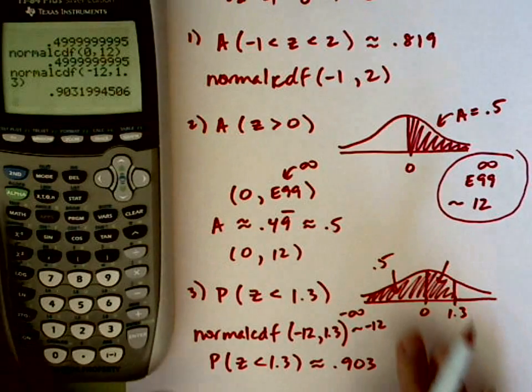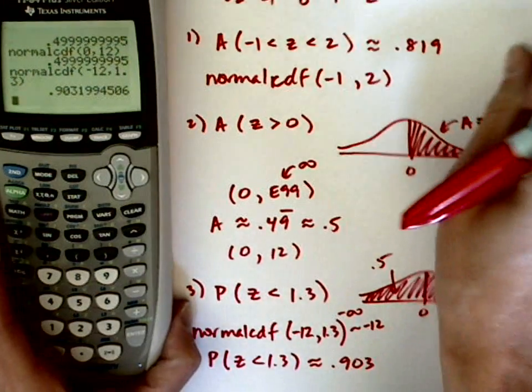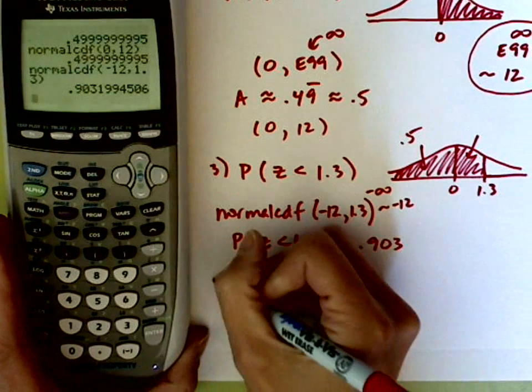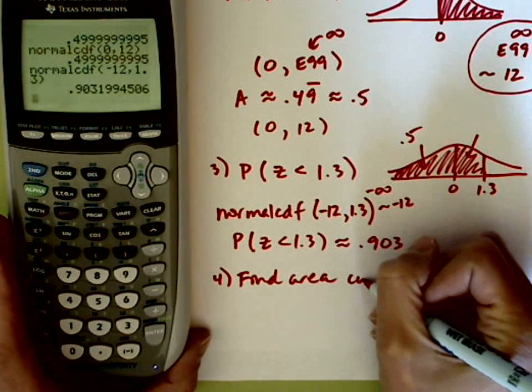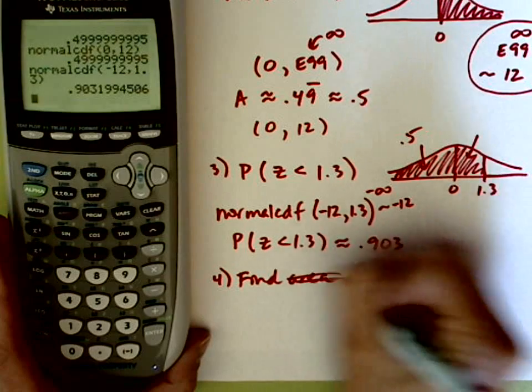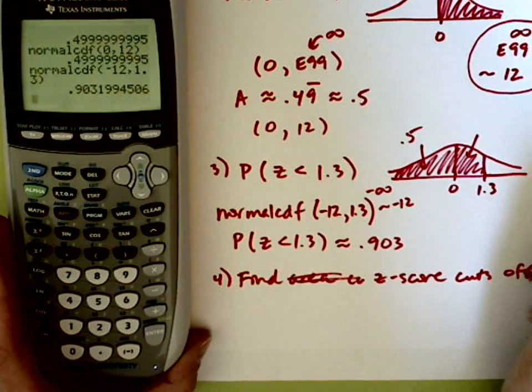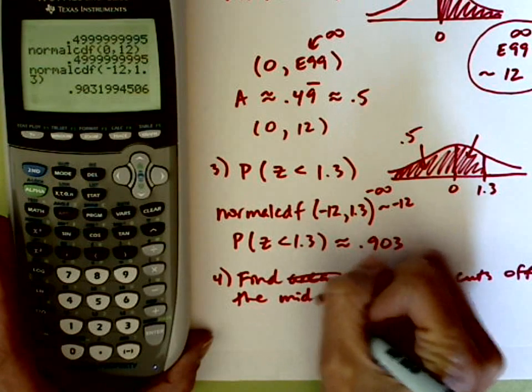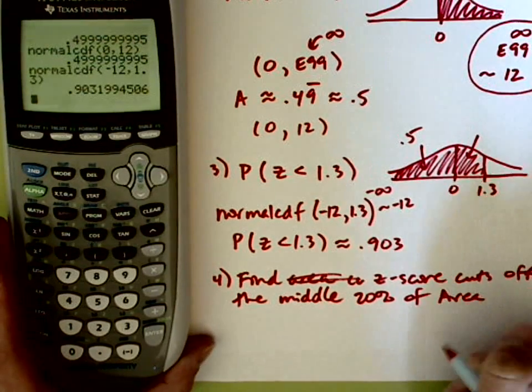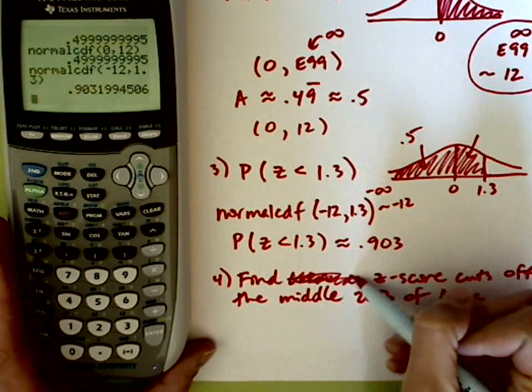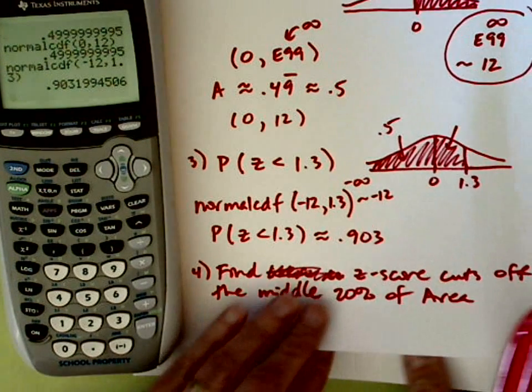You can also use this to find z-scores that correspond with an area. I'm just going to do one example of that. So number four, we're going to find the z-score that cuts off the middle 20% of the area. Okay, so we're not finding an area this time. We're finding a z-score.